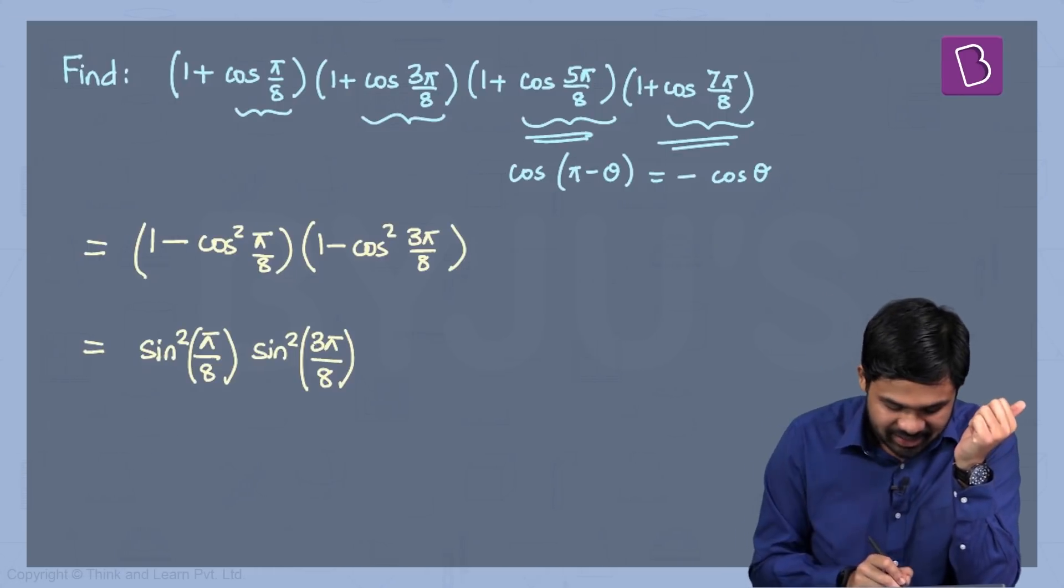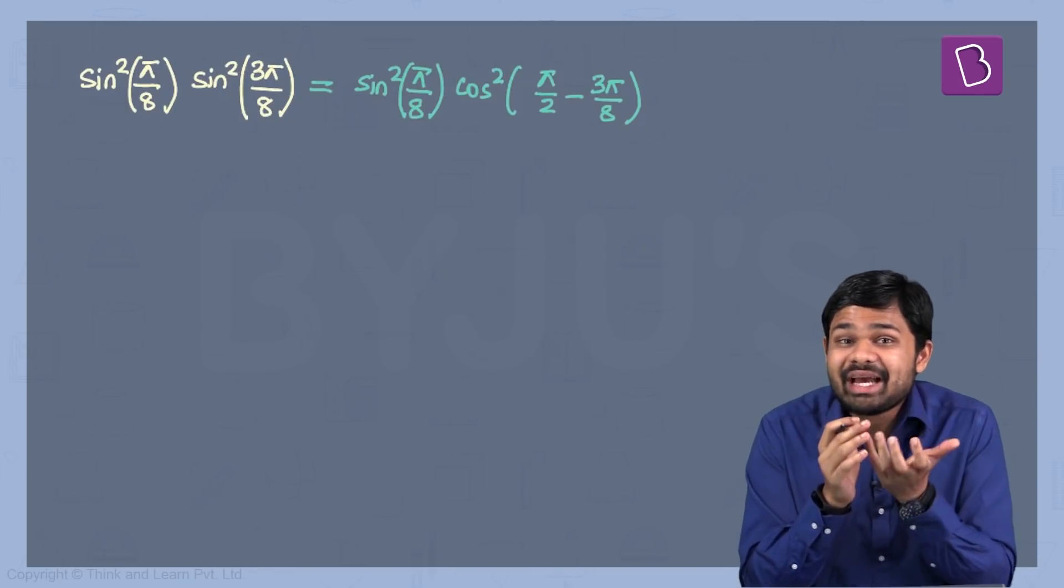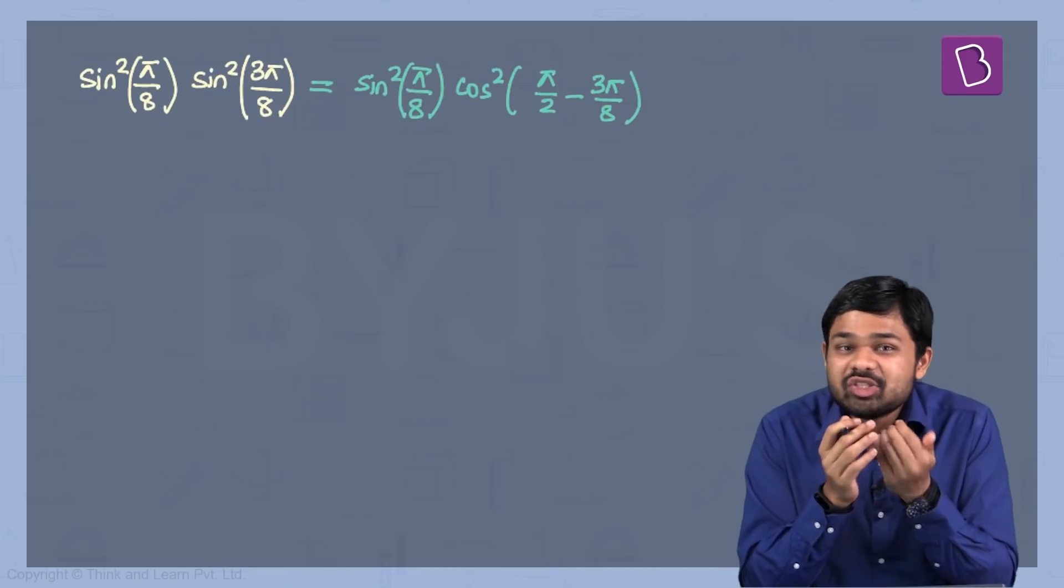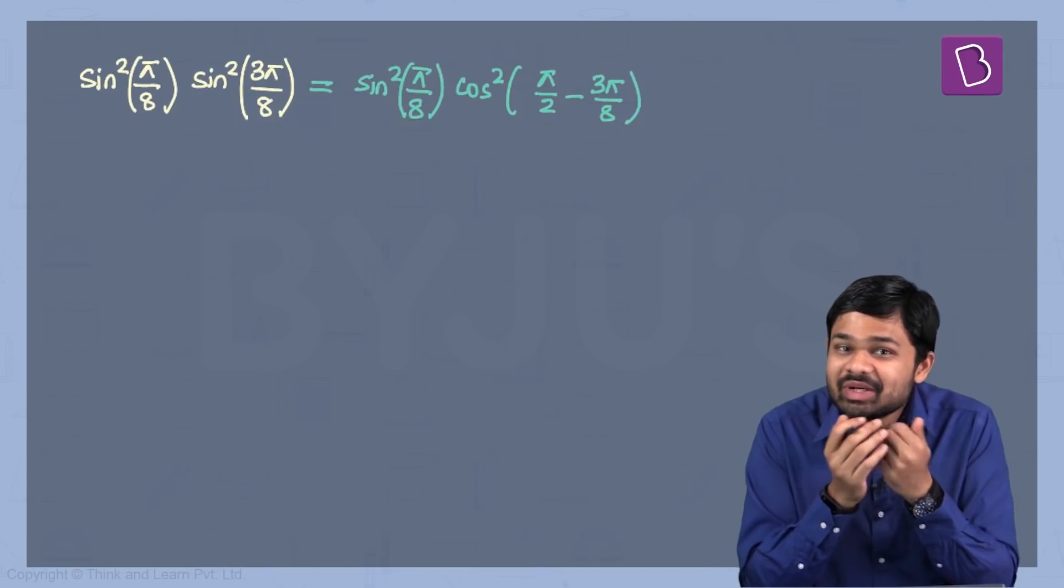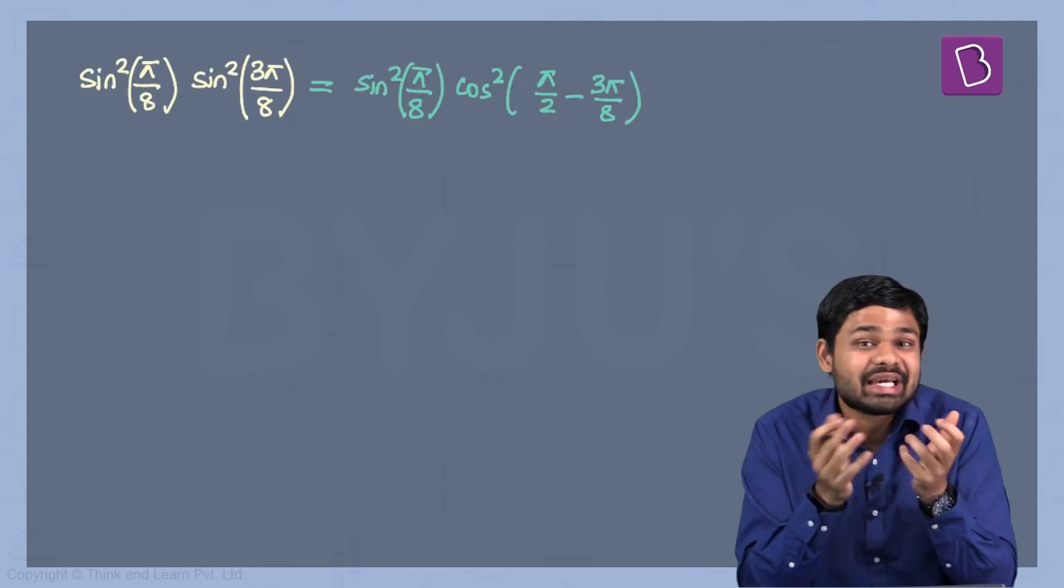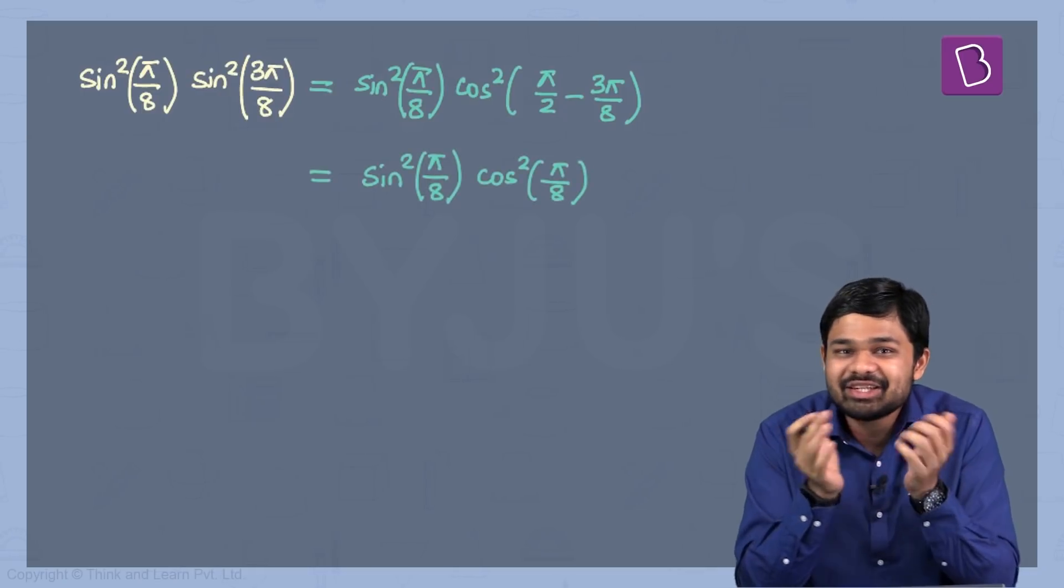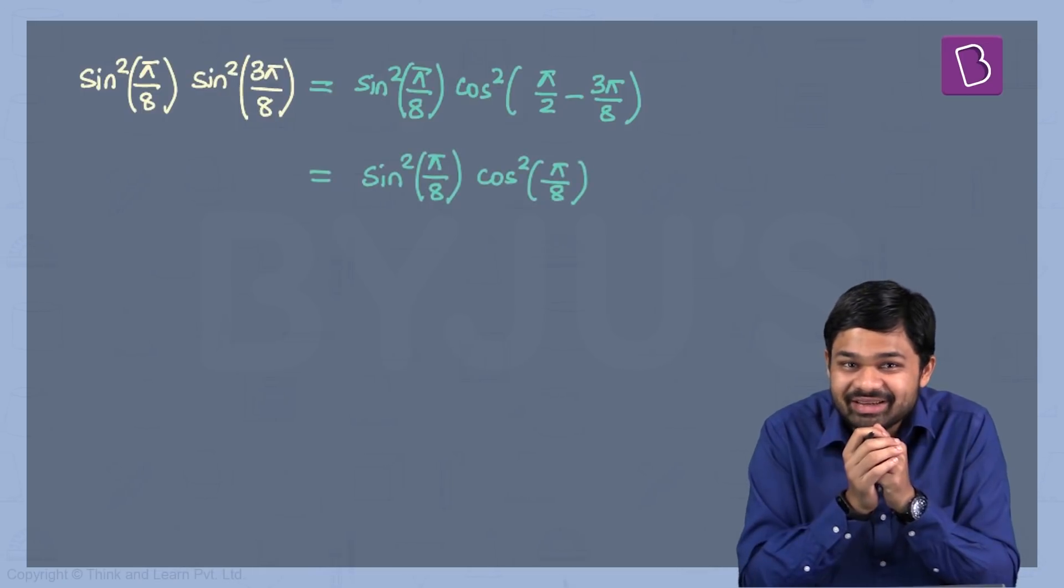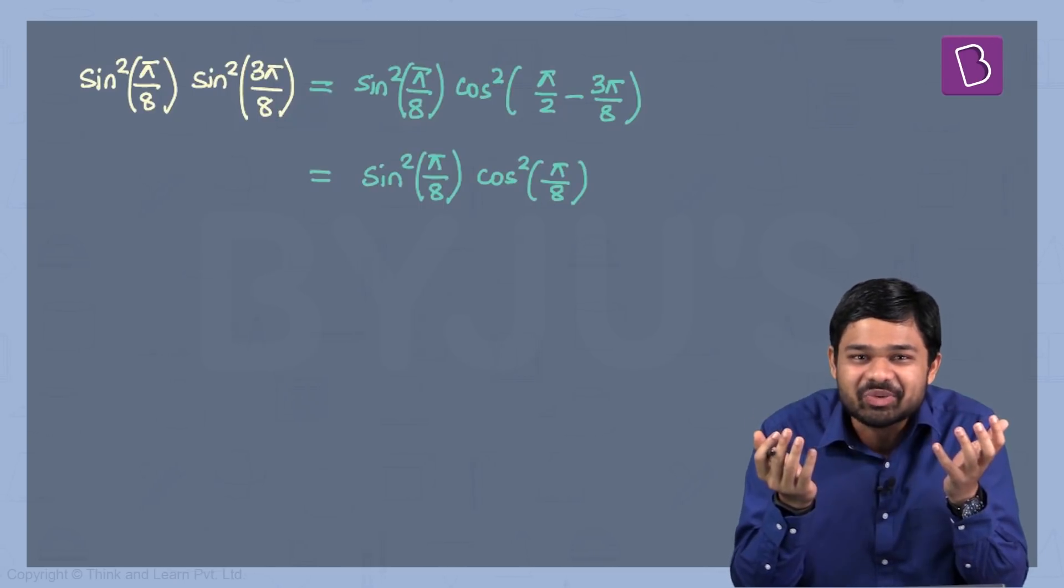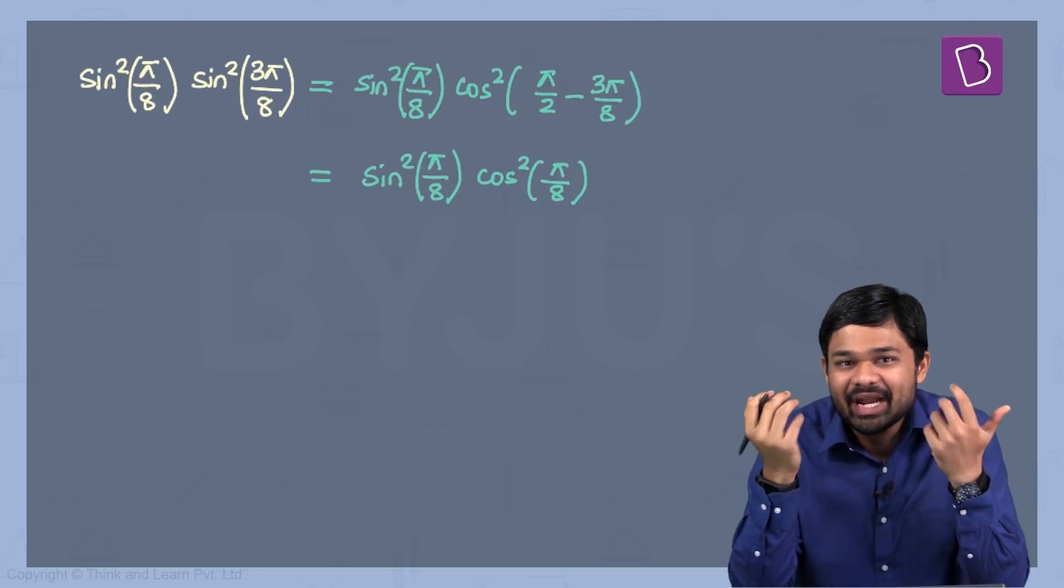I'm going to simplify this further because I'm going to express sine in terms of cosine. How do I do that? I'm going to use cos(π/2 - θ) = sin(θ) and reduce this expression in terms of sines and cosines. Immediately I get an expression, and what's more interesting, the arguments are exactly the same. It's sin²(π/8) and cos²(π/8).